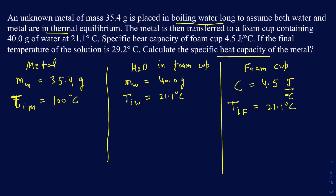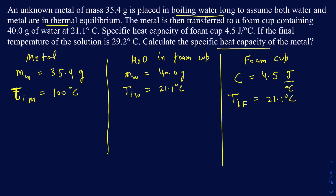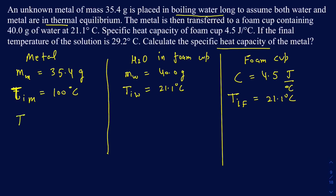Once everything is placed together, and assuming no heat is lost to the surroundings, the energy from the metal — which is at a higher temperature — will be transferred to the water and the foam cup. The final temperature, once all three are in thermal equilibrium, is going to be 29.2 degrees Celsius, and that T_final applies to all of them.